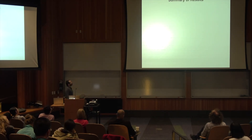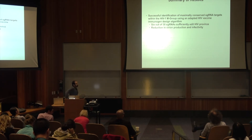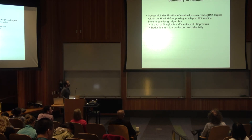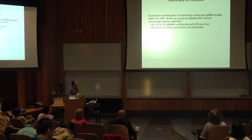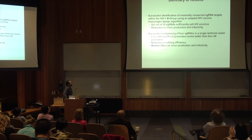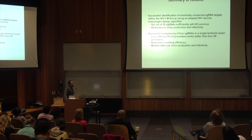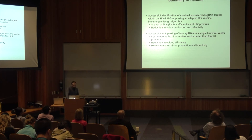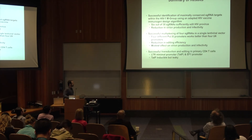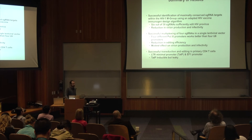Summary of results: we successfully identified maximally conserved guide RNA targets within the HIV-1 M group — testing 30, identifying six that edit the provirus, three of which led to reduced virion production and infectivity. We successfully multiplexed four guides in a single lentiviral vector; four different Pol III promoters works better than four U6 promoters. However, multiplexing led to reduced editing efficiency and only a modest effect on virion production and infectivity. We also successfully transduced and edited primary CD4 T cells using both an LTR minimal (TAT-inducible) promoter and an EF1-alpha promoter driving Cas9. The TAT promoter is inducible but leaky.